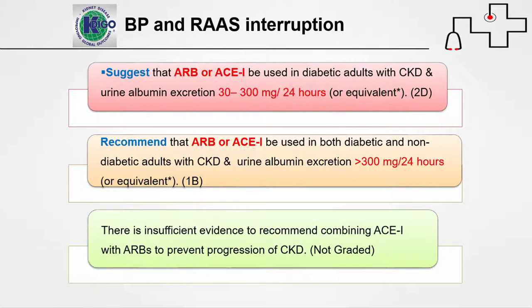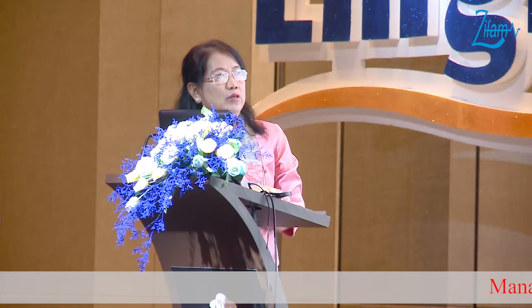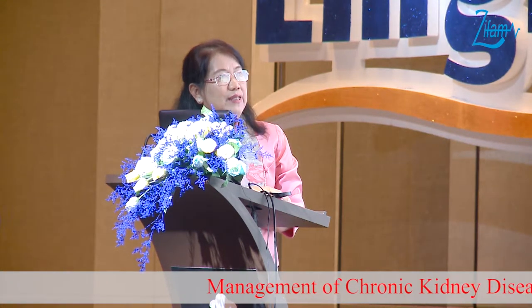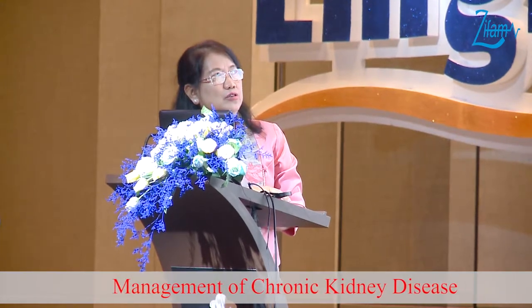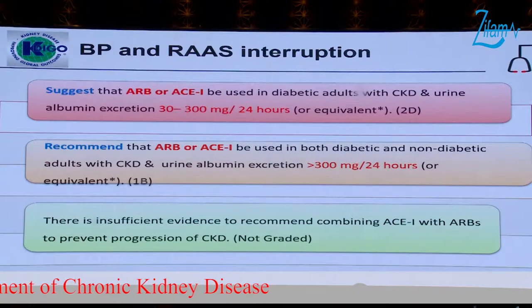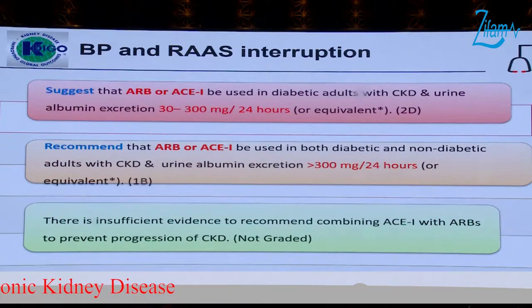For antihypertensive agents, ARBs and ACE inhibitors can be used in diabetic CKD patients with urinary albumin excretion between 30 and 300 milligrams per 24 hours. These RAAS blockers can be used in both diabetic and non-diabetic CKD patients. For proteinuria less than 300 mg/day, use in diabetic patients; for more than 300 mg/day, use in both diabetic and non-diabetic patients.